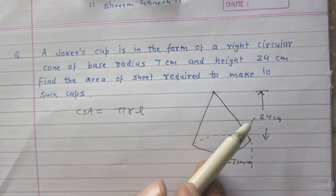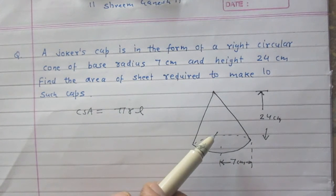We are given radius and vertical height of this cone. So let us calculate slant height of this cone first.